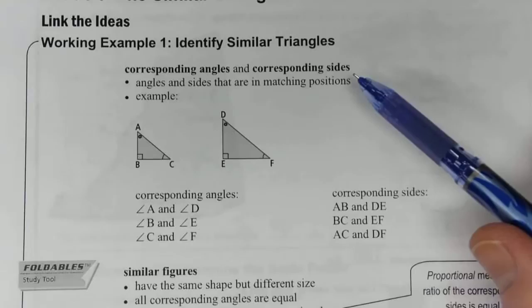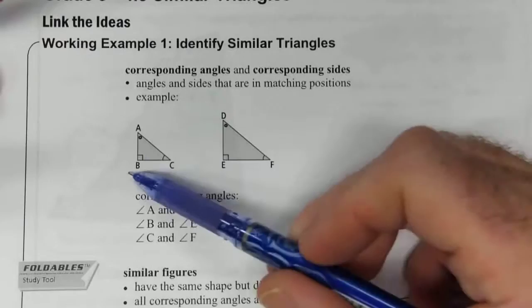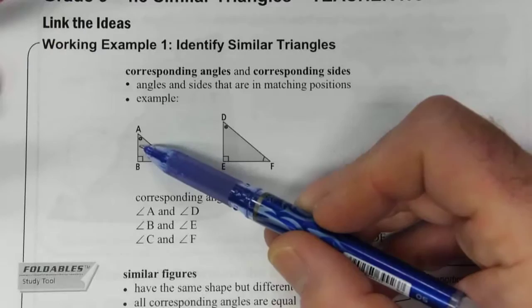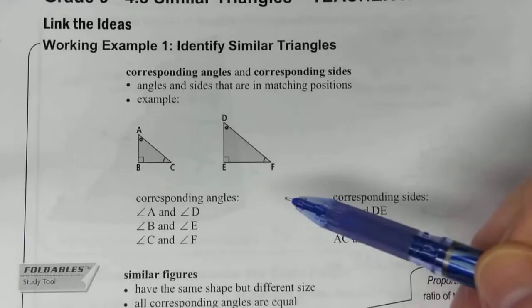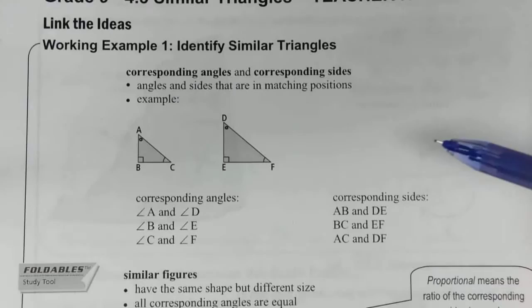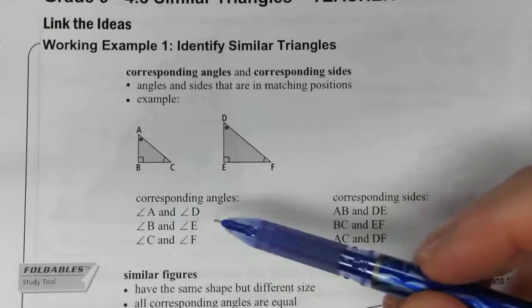Corresponding angles are angles that match on two different triangles. So here there's a little circle indicating that A and D are the same angle. The little square here shows that angles B and E are the same and they're both 90 degrees. And then angle C there's a little arch or arc through there that shows that they match, so angle C and F match as well. Those are called corresponding angles.